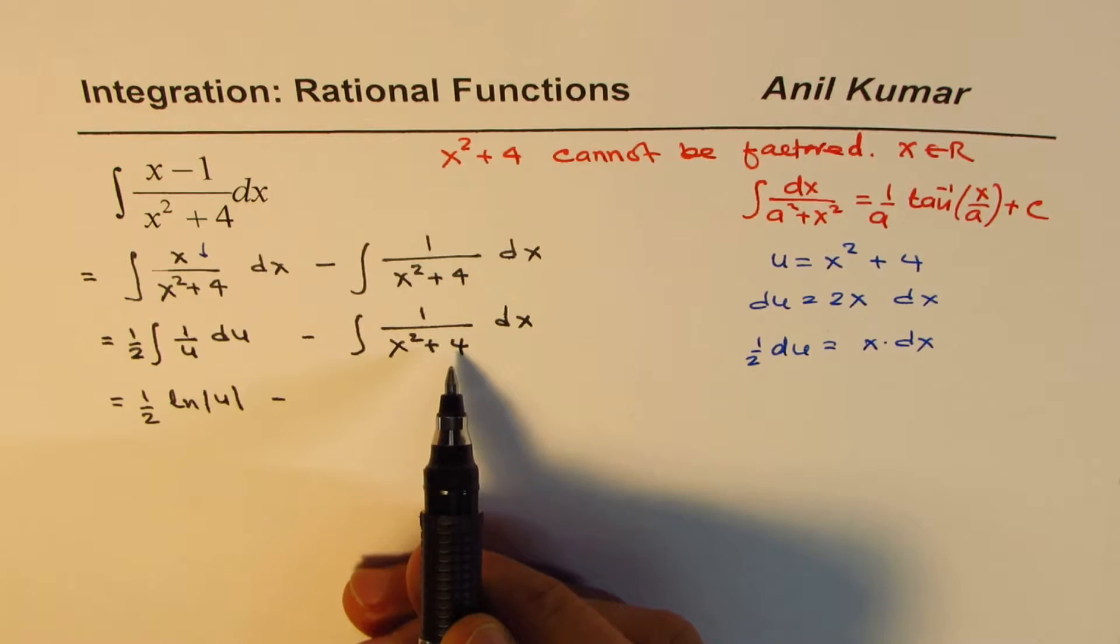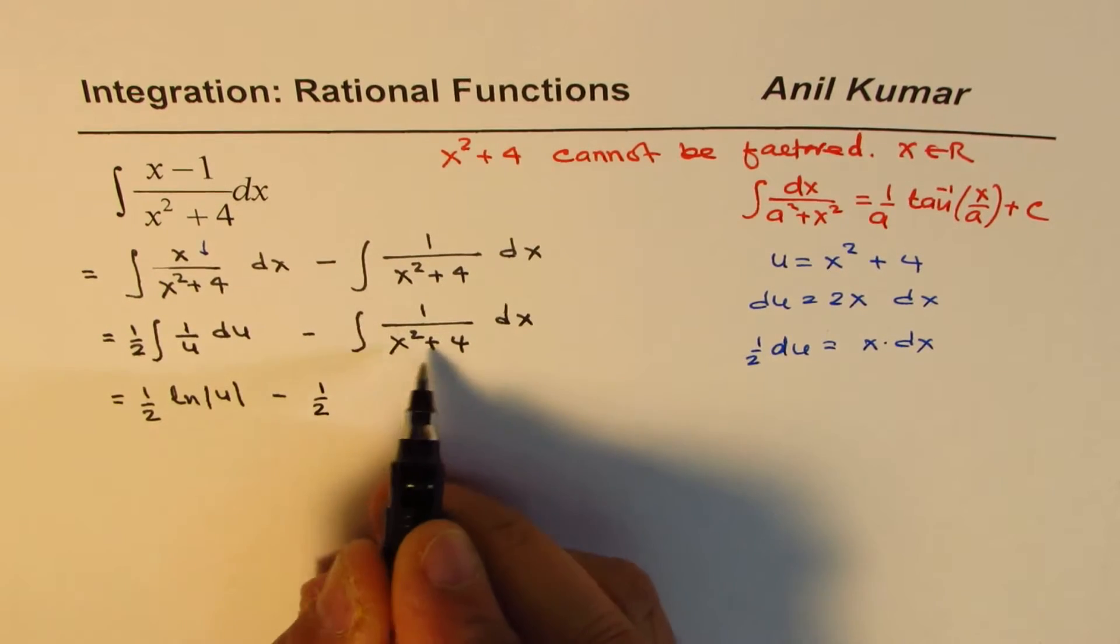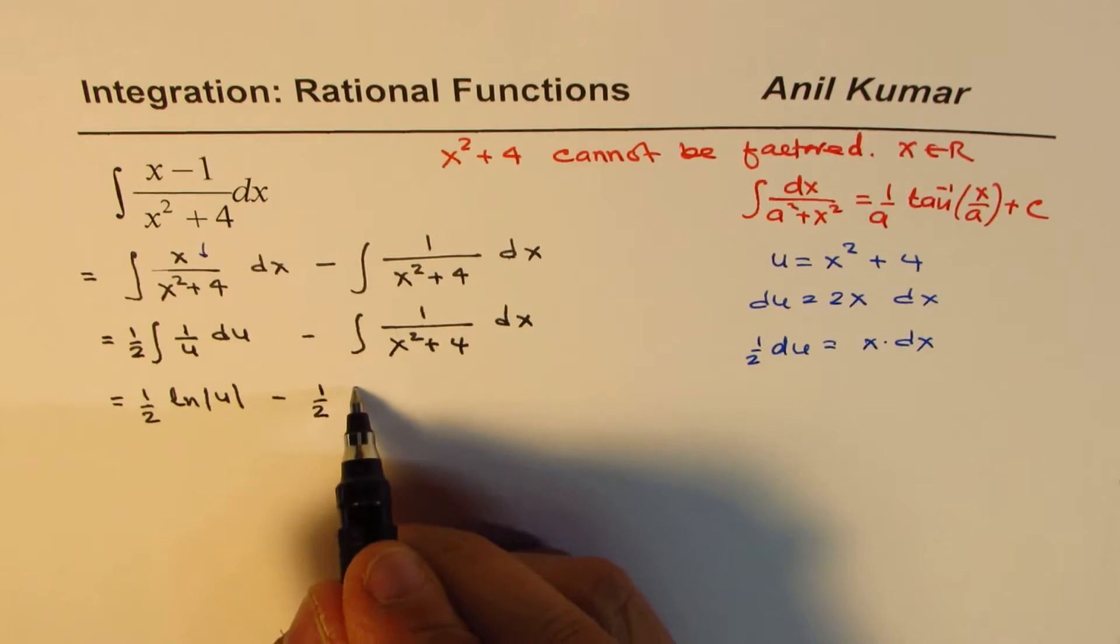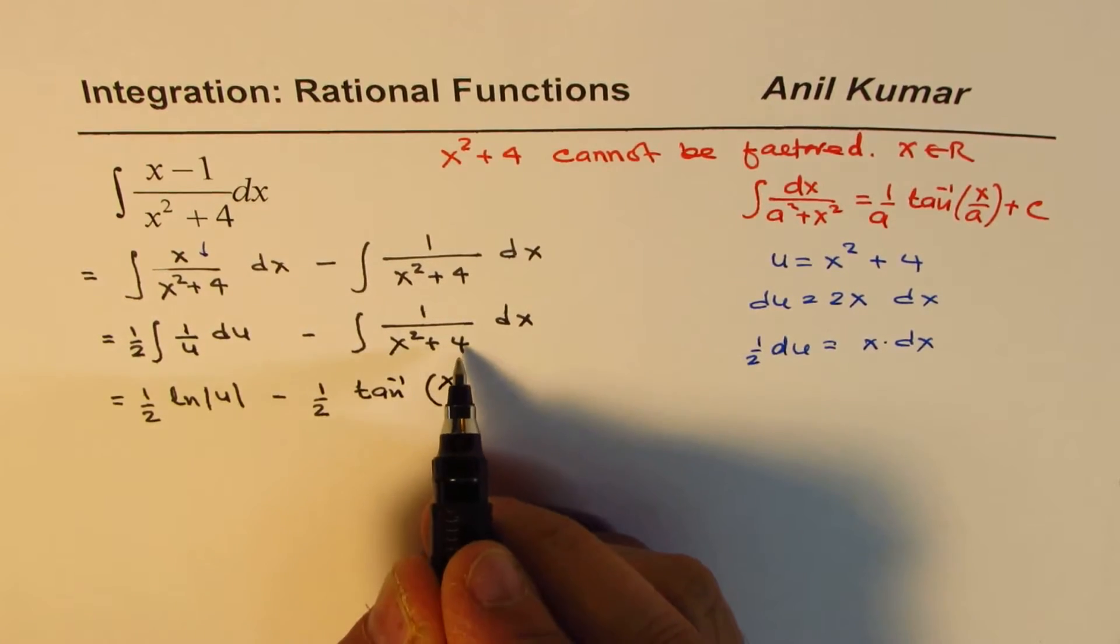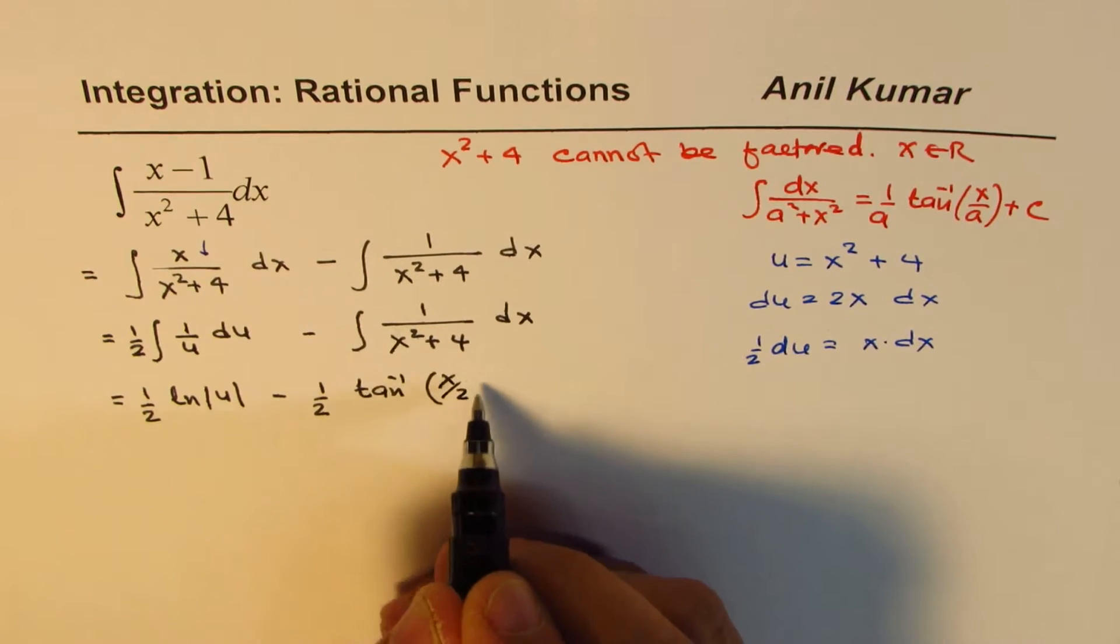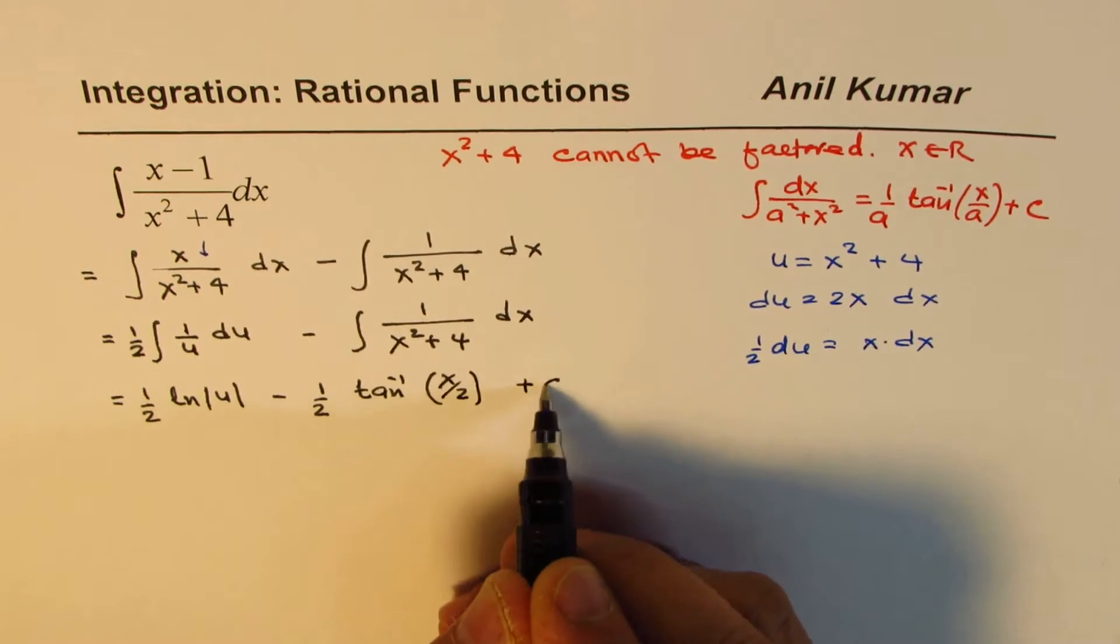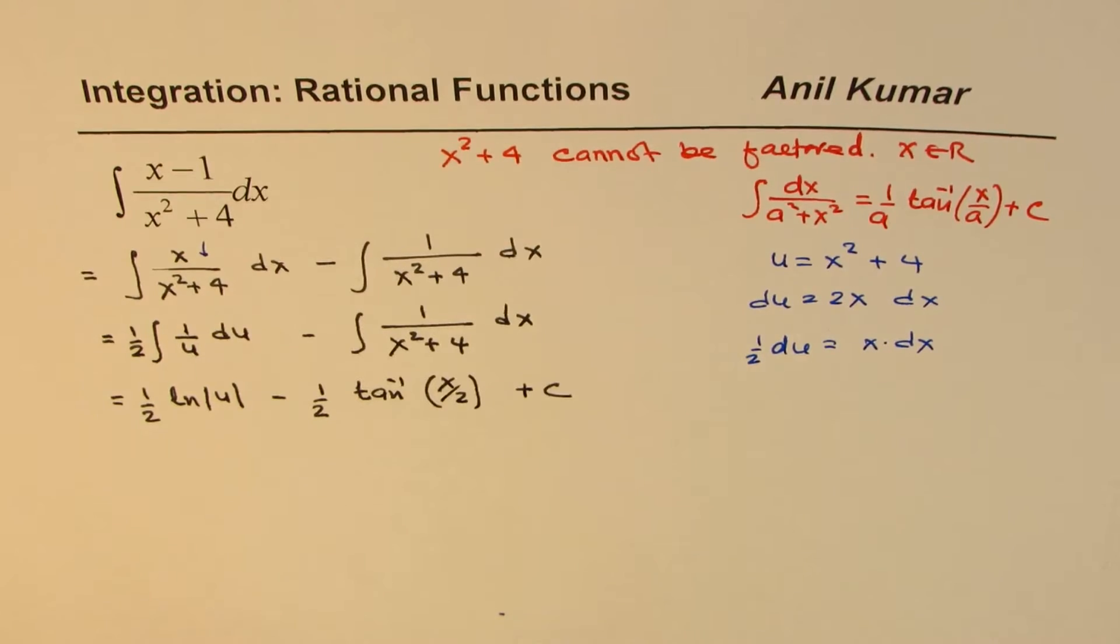So, therefore, we could write this as 1 over 2. That is half, a is 2 here and then tan inverse of x over a, which is 2, x over 2. And plus c, which is the solution for this.